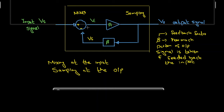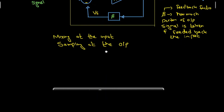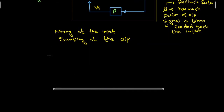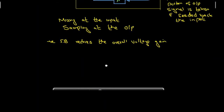This is a negative feedback amplifier because the feedback signal is negative with respect to the input signal. Vi equals Vs minus Vf because Vf is applied to the negative terminal. The amplifier amplifies this signal and applies it to the output, and then part of the output is fed back to the input through the feedback network. The negative feedback reduces the overall voltage gain, but by doing so it improves a number of parameters.